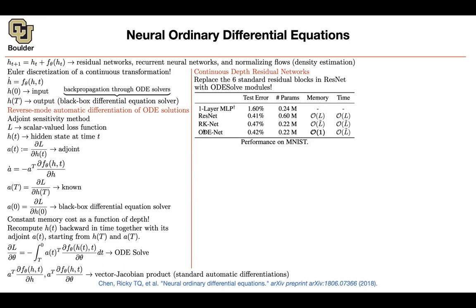A question from the chat: is the ODE solve just another way to optimize for parameters instead of using gradient descent? No — the forward ODE solve replaces a residual block in the neural network, and the backward ODE solve gives you the gradients you need to perform gradient descent. You still do gradient descent in the end.